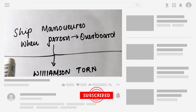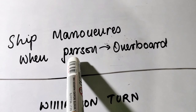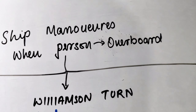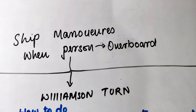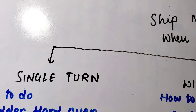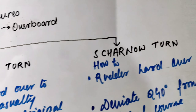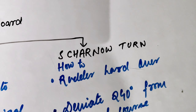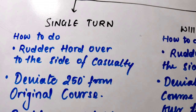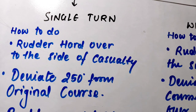Hello and welcome. In this video I'm going to discuss ship maneuvers when a person falls overboard. There are three maneuvers: single turn, Williamson turn, and Scharnow turn. We will now discuss each one.